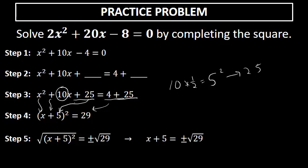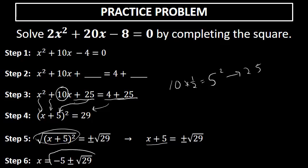Step five: take the square root of both sides including a plus or minus, giving x plus 5 equals plus or minus the square root of 29. Step six: subtract 5 from both sides to solve for x. The solution to 2x squared plus 20x minus 8 equals 0 is x equals negative 5 plus the square root of 29 and negative 5 minus the square root of 29.